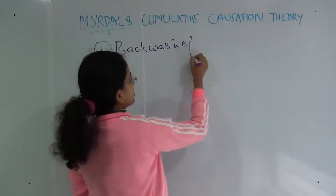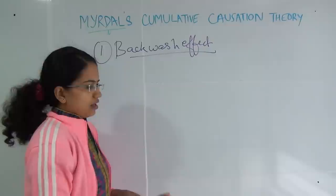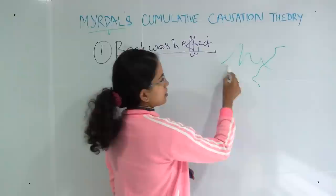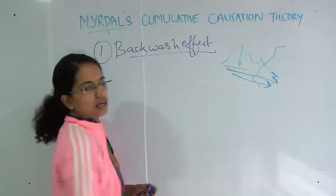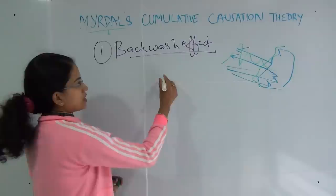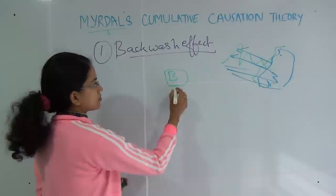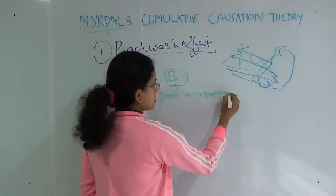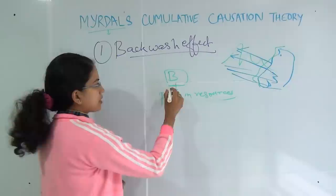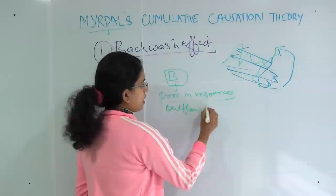Now how do we understand the term backwash? If you have been to any ocean beach, during high tide, this water would slowly and gradually enter into the beach, and as the high tide retreats, the water would go out. So this region of the beach would be considered as a region of backwash. What happens in the backwash effect is, region B, which was not good as we discussed, and is already poor in resources — since it is poor in resources, the people here would like to move out to region A where they can get better job opportunities. So from this region, there would be an outflow of labour.